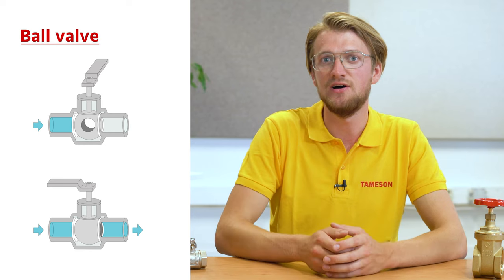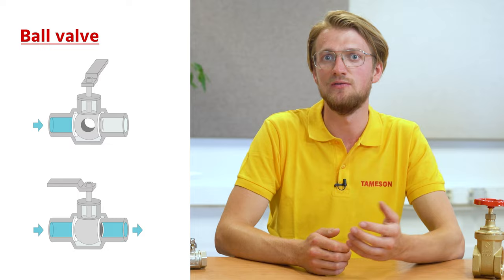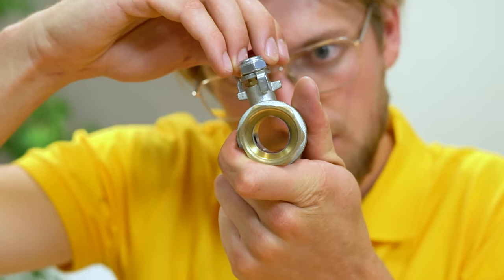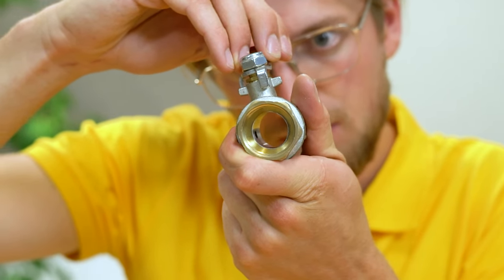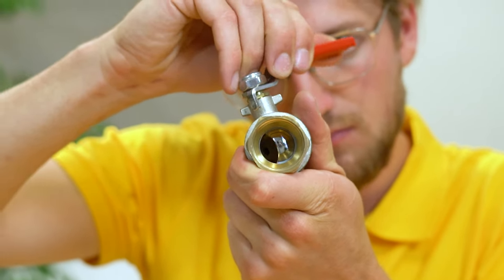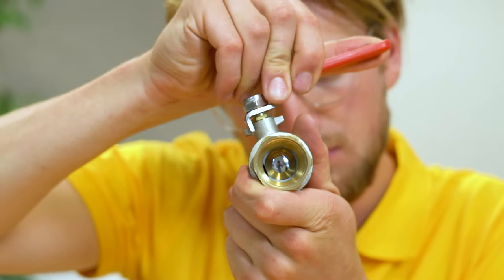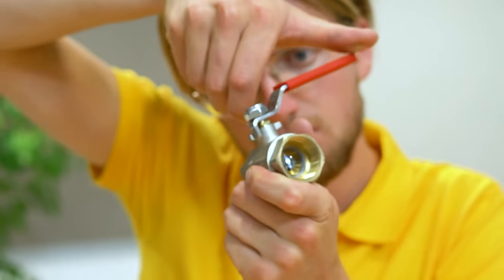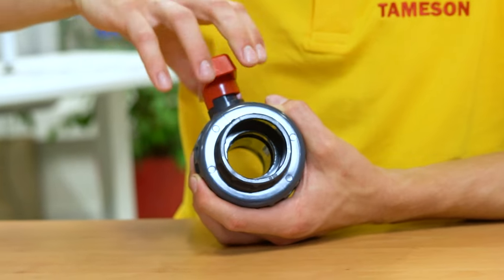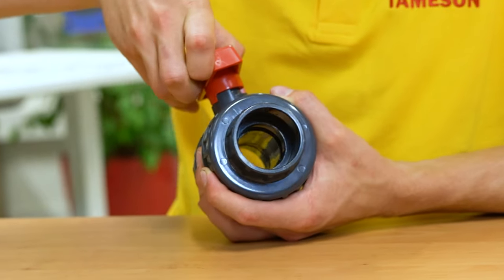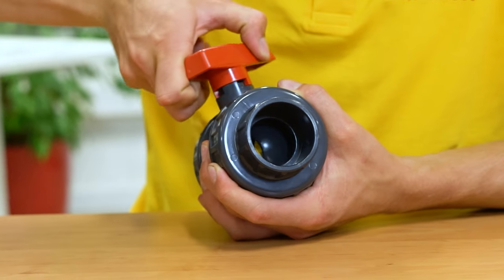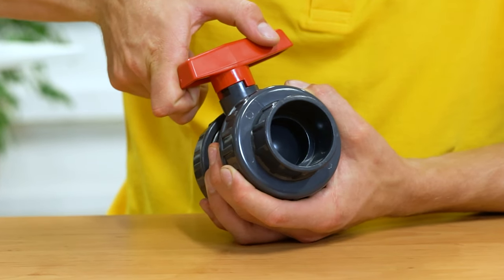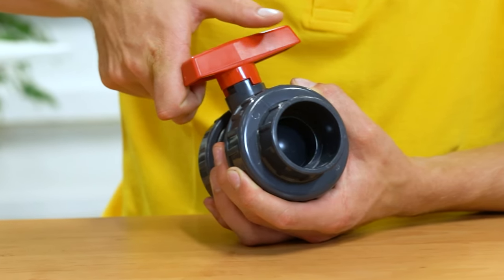A ball valve uses a rotating ball with a bore and a spindle. By turning the handle, the ball rotates and opens or closes the valve. The valve is open when the lever is parallel to the pipe and closed when the lever is perpendicular to the pipe.